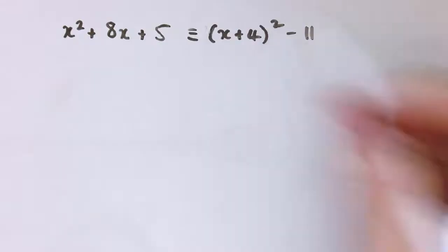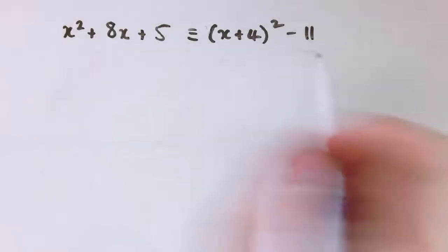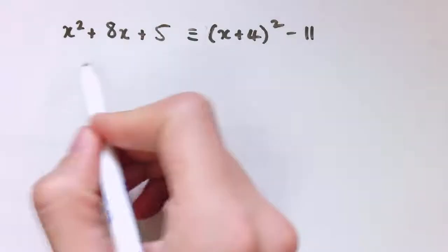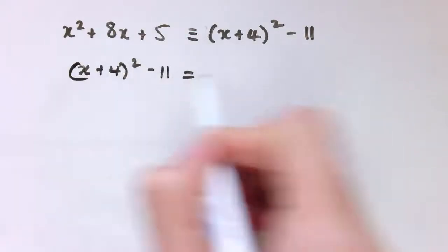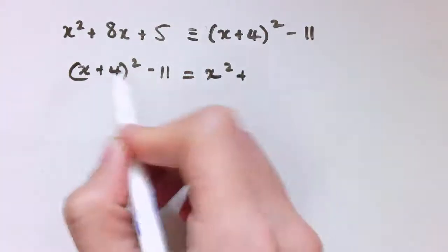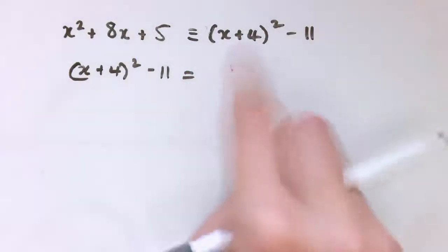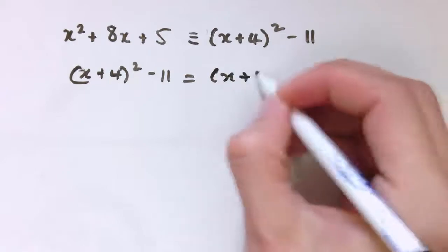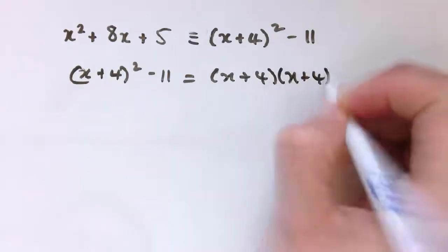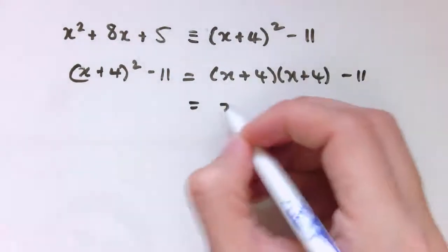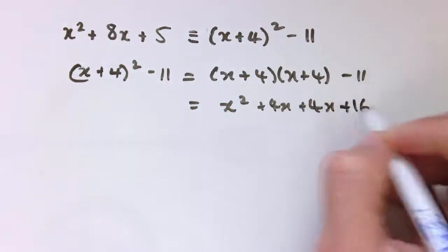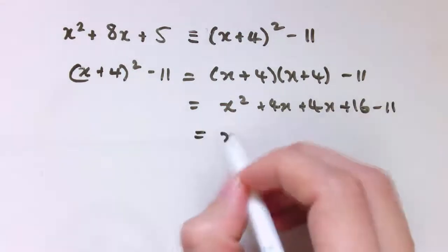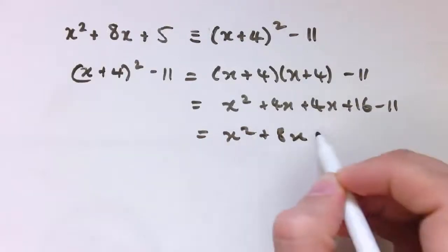But this one is x + 4 squared minus 11. And you really can check that this works, we just have to multiply this out, so x + 4 squared minus 11, that would give us x² plus, let's write it out in full, so it's x + 4 times x + 4 minus 11, so that's x² + 4x + 4x + 16 - 11, so that gives us x² + 8x + 5.